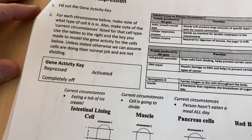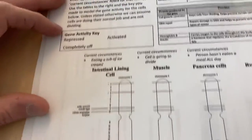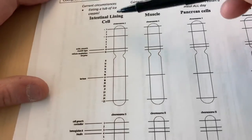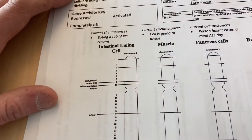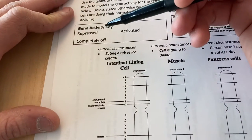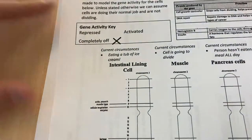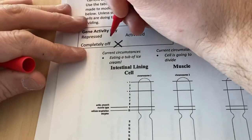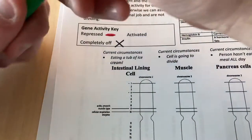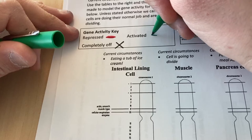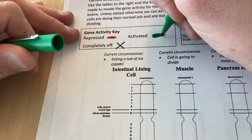In this video I'm going to be introducing modeling gene expression. We have different types of cells — they all have the exact same DNA, the same genes. What's going to be different is that some genes are going to be repressed, completely off, or activated. Completely off means that gene will never be turned on in that cell. Repressed means it's not currently on but could be turned on. Activated means the cell is actively reading that gene and expressing that trait.